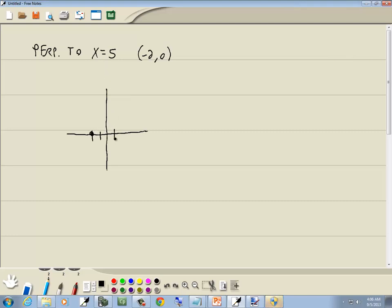Perpendicular to x equals 5. x equals 5 is a vertical line at 5, like that.